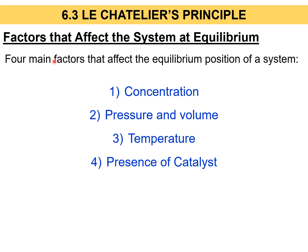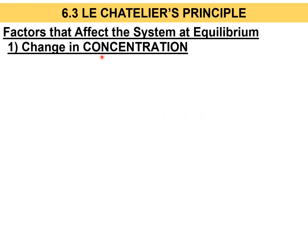Basically, there are a few factors that will affect the system at equilibrium. The first one is concentration, the next is pressure and volume, the third is temperature, and the last is the presence of a catalyst.